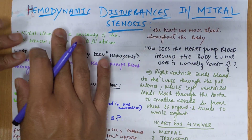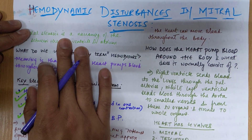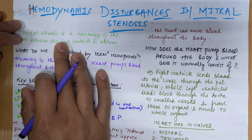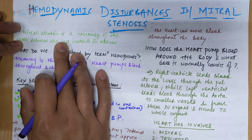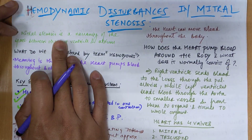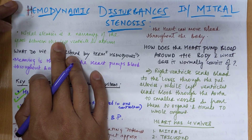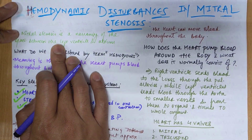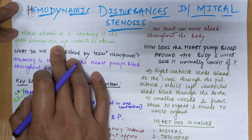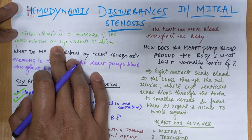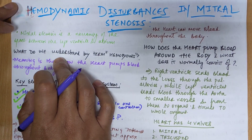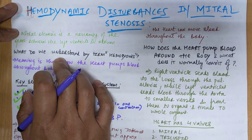Hello everyone. In this video we will be seeing the topic of haemodynamic disturbances in mitral stenosis, which is a disease of the heart — specifically a valvular disease. Mitral stenosis is the narrowing of the space between the left atrium and left ventricle, the two chambers of the heart.